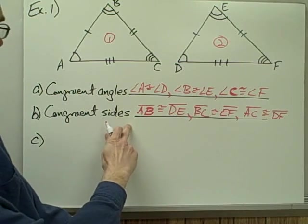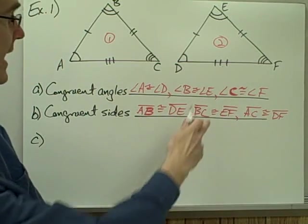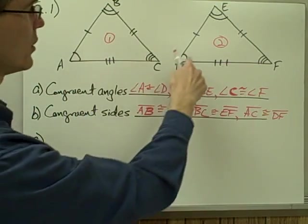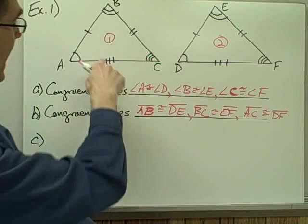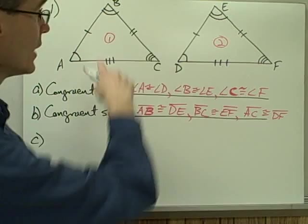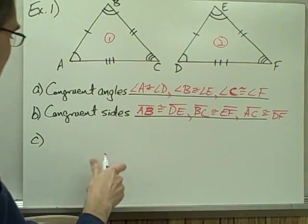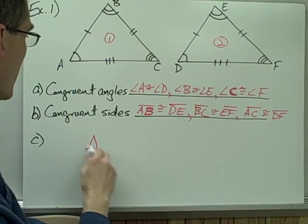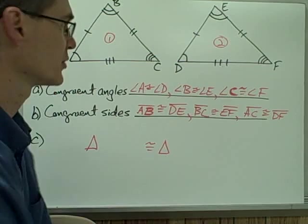Now I've written down all of my pairs of congruent sides. Since I have all three angles of triangle number one congruent to all three angles of triangle number two, and all three sides of triangle number one congruent to all three sides of triangle number two, I know that these two triangles must be congruent. So I can write down that triangle number one is congruent to triangle number two.